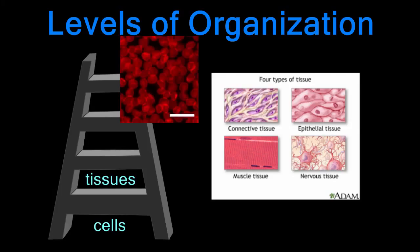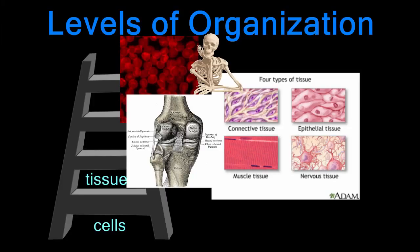A group of similar cells working together to perform a certain function is called a tissue — the next step on the ladder of life.